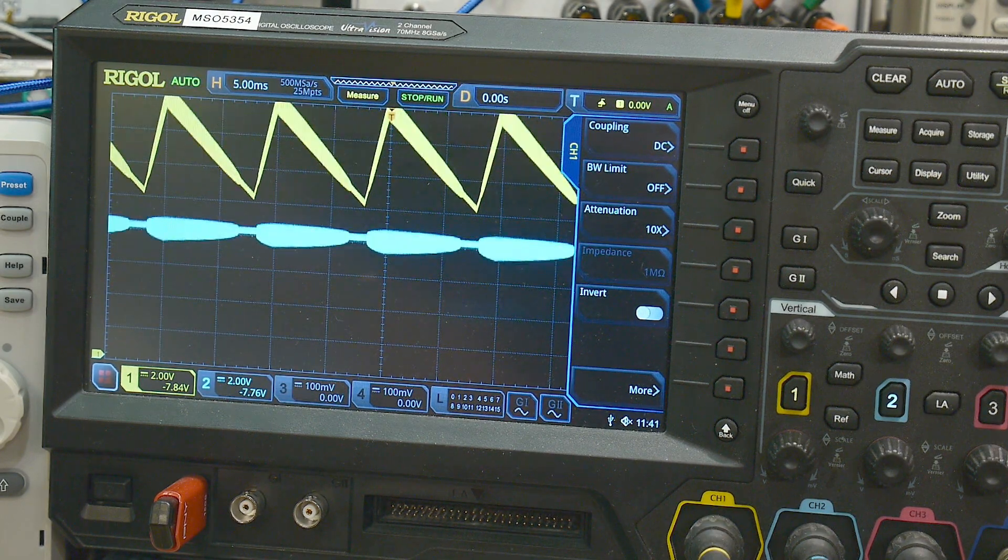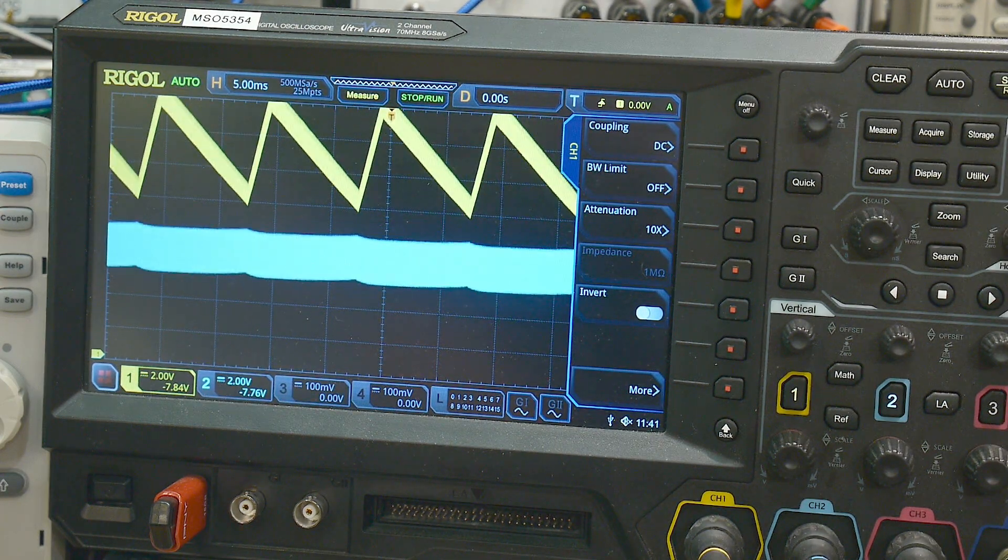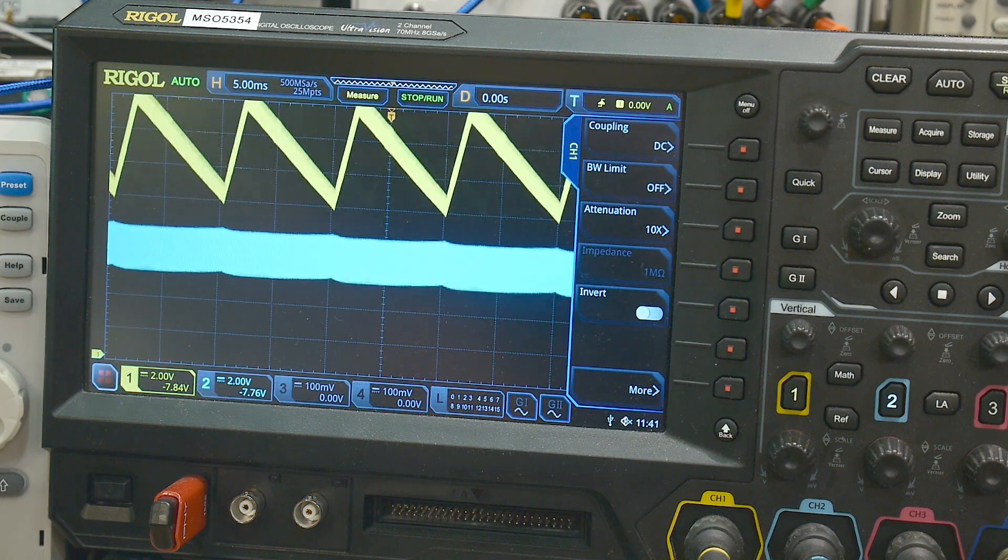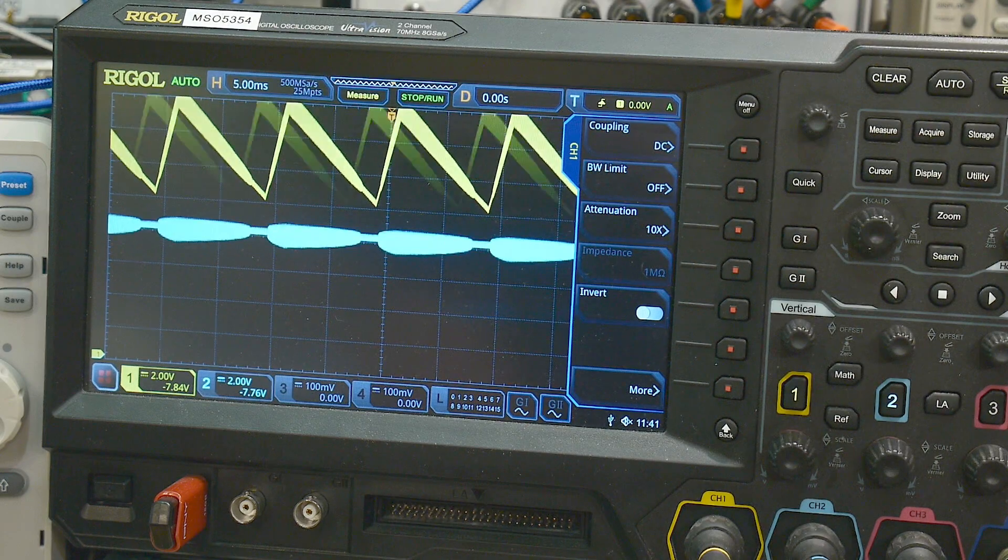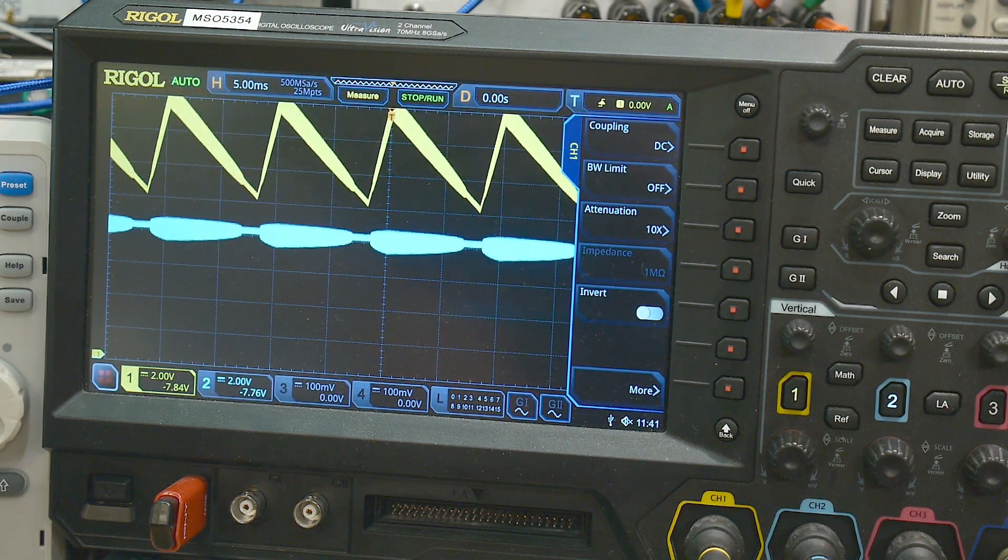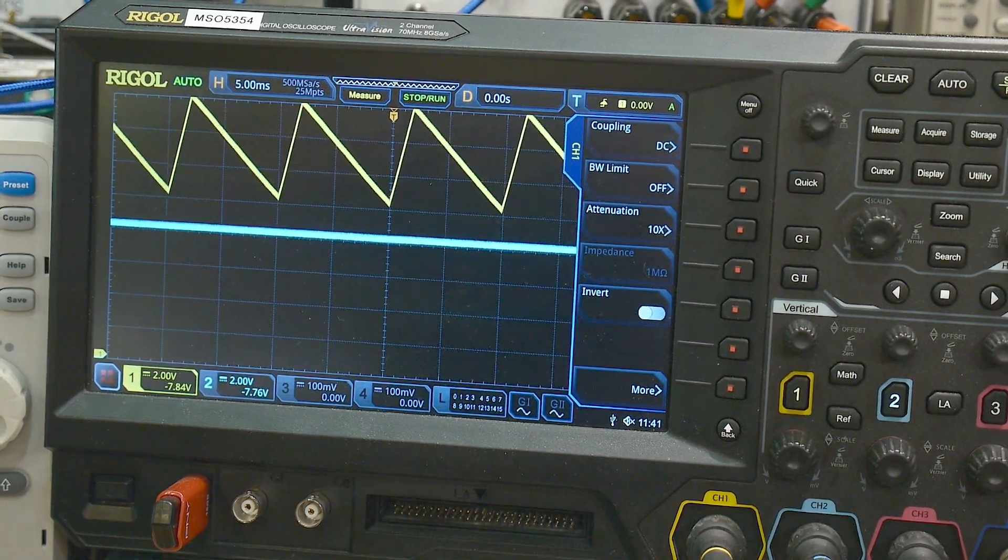This is 1 microfarad and it's almost gone, it's almost gone. So let me put the 1 microfarad on the input so you can see that it doesn't do anything here. Yeah, it makes it worse. Putting the 1 microfarad on the input makes it worse, and then putting the 1 microfarad on the output makes it quieter. So anyway, pretty interesting stuff.